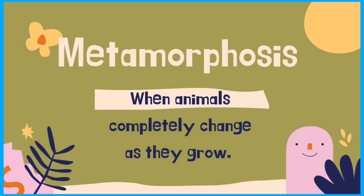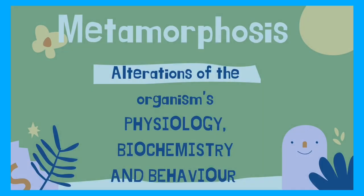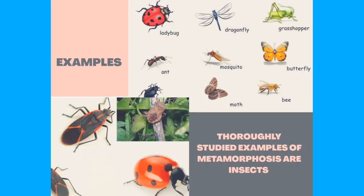Some animals don't look like their parents as they grow — they completely change. This is called metamorphosis. These physical changes, as well as those involving growth and differentiation, are accompanied by alterations of the organism's physiology, biochemistry, and behavior. Insects and amphibians are animals that go through metamorphosis, and among the most dramatic and thoroughly studied examples are the insects.